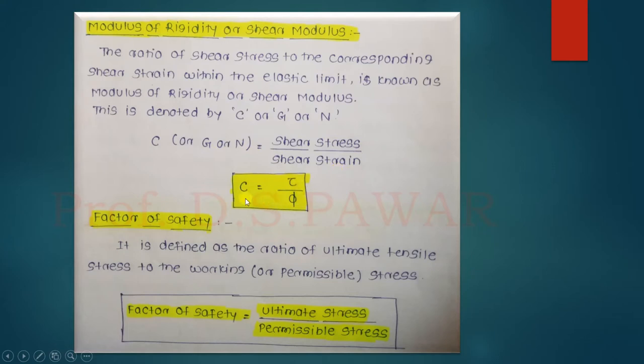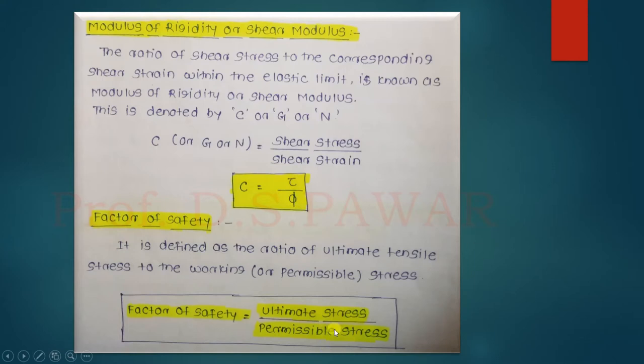Next is the factor of safety. When you are going to consider the design of a concrete structure or any steel structure, we have to consider the factor of safety, because safety is our prime concern in design. The factor of safety is the ratio of ultimate stress divided by permissible stress. This is the simple definition of factor of safety: ultimate stress divided by permissible stress.